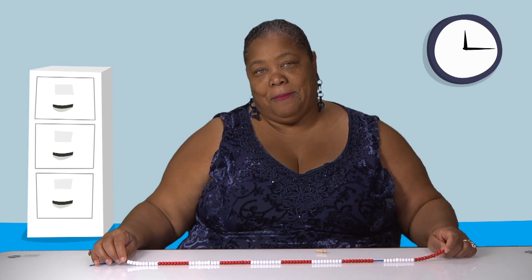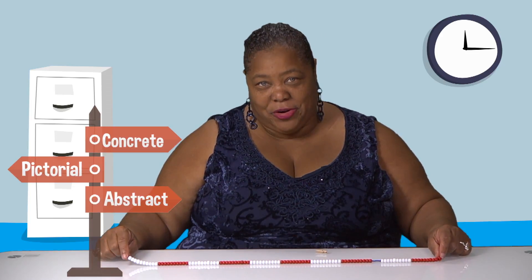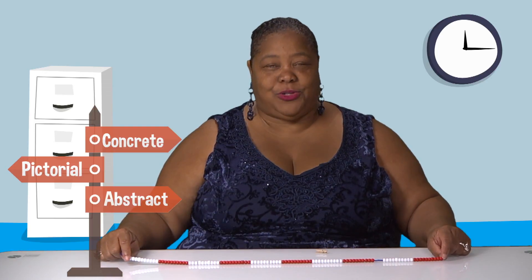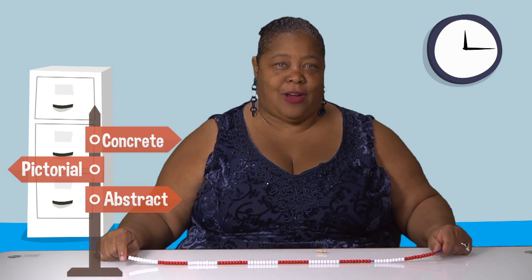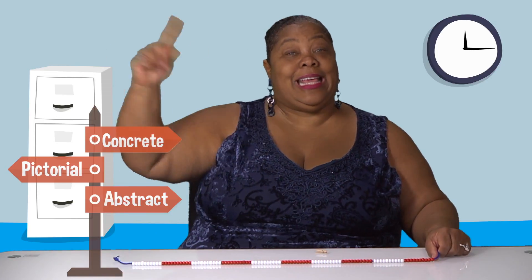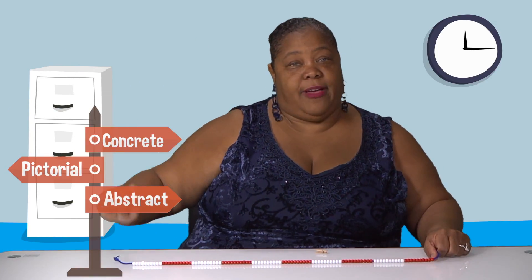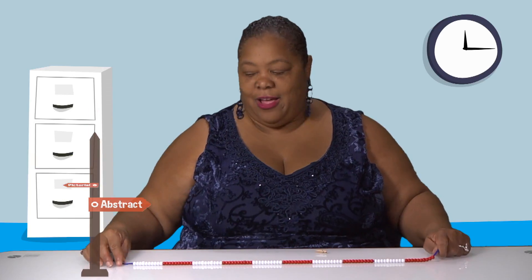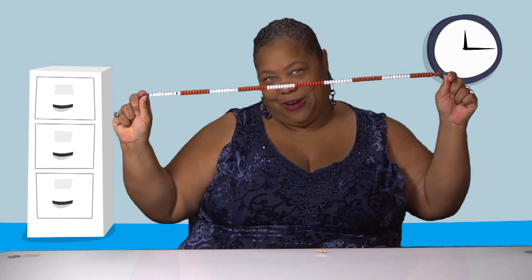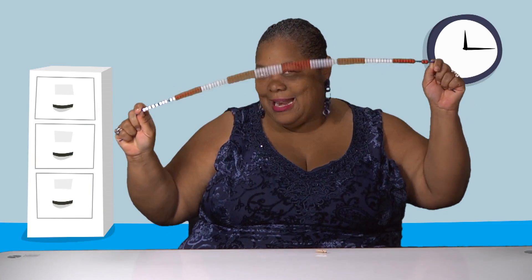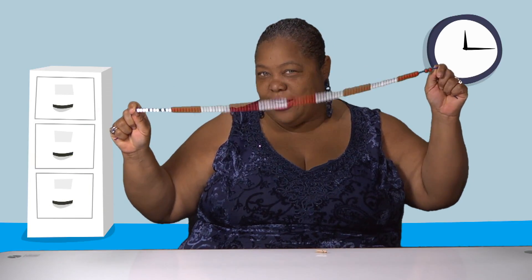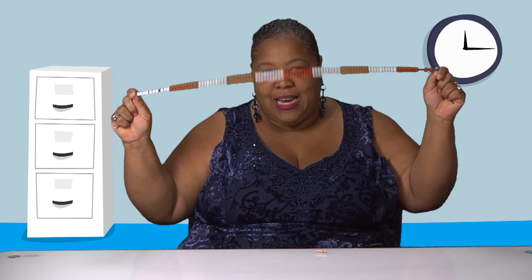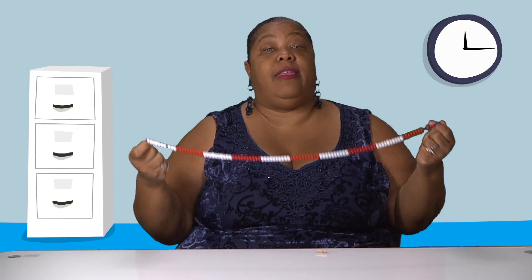Remember: concrete first, then pictorial, then abstract. You're going to get to the place value chart; you're just not going to start there. You should start here. The Beaded Number Line will change your lives — everybody needs it.